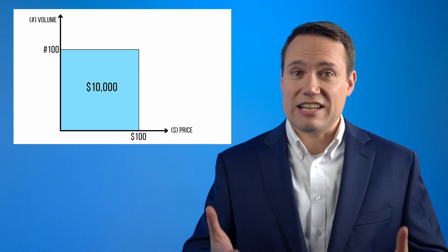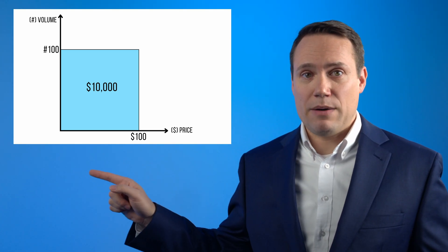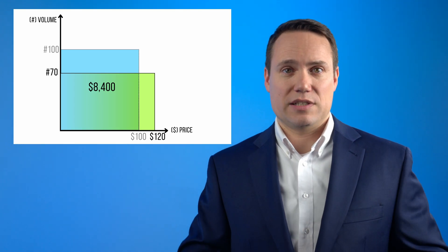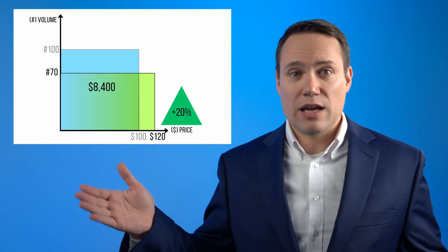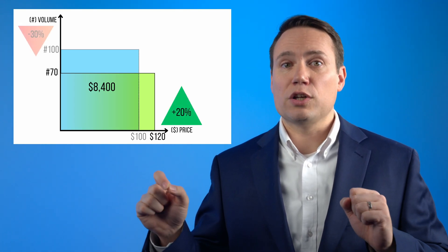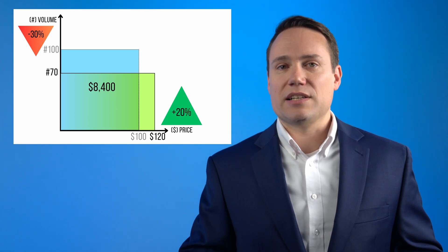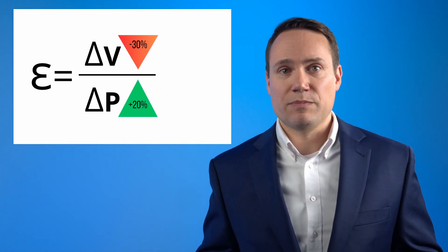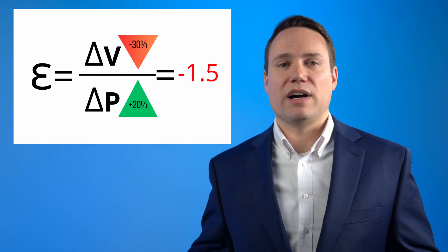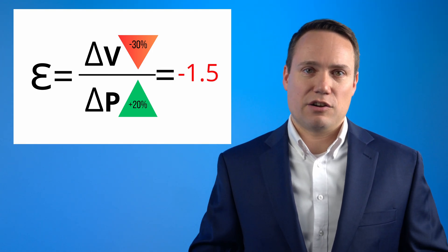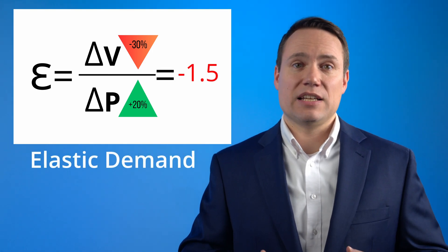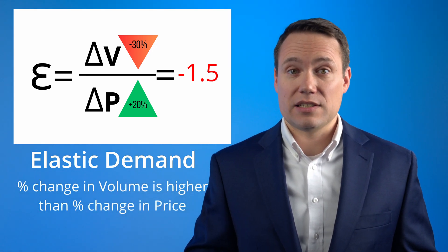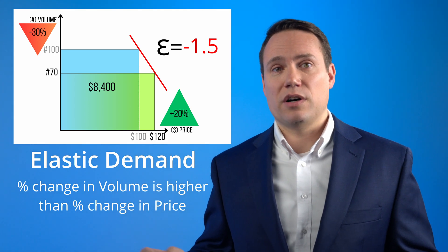Now let's assume a second scenario. Here the same company, when increasing the price to $120, is only able to sell 70 units. So an increase in price by 20% leads to a volume reduction of 30%. The elasticity is negative 30% over plus 20%, or negative 1.5. In the second scenario, we're talking about an elastic demand because the percentage change in volume is higher than the percentage change in price. Revenues decrease to $8,400.